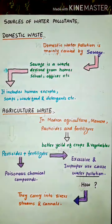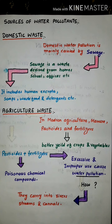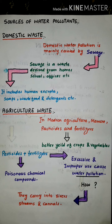The second topic is sources of water pollutants. We will discuss three sources here. The first source is domestic waste, which is called household waste.